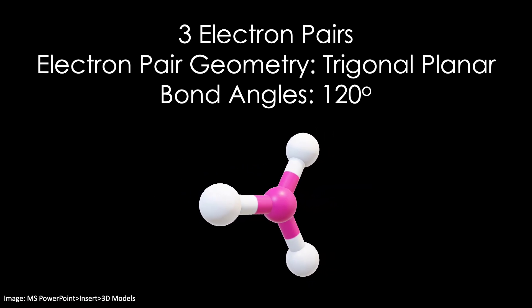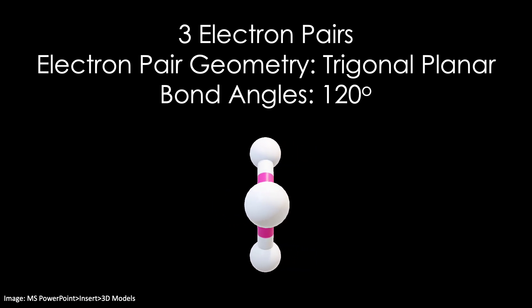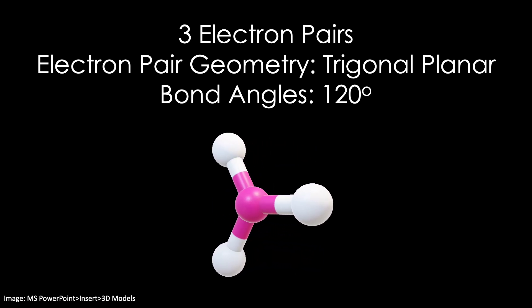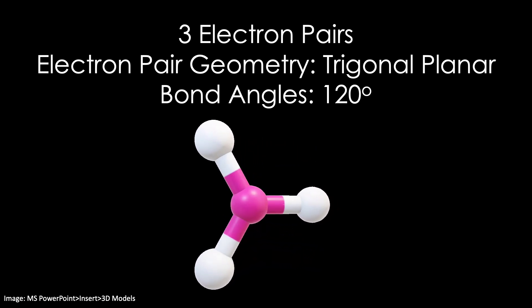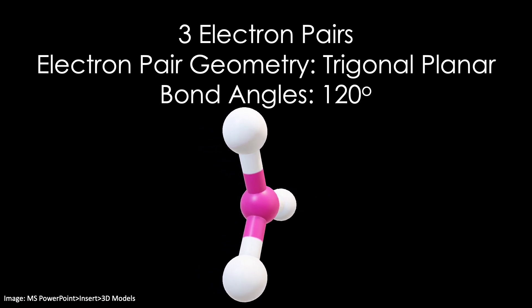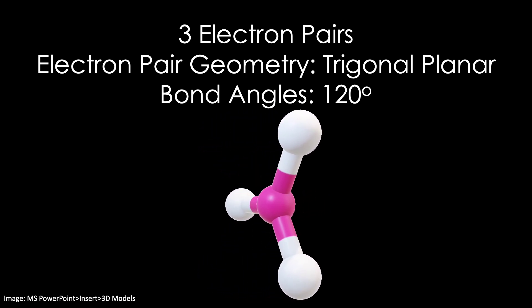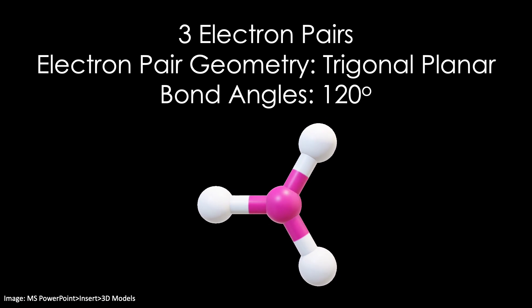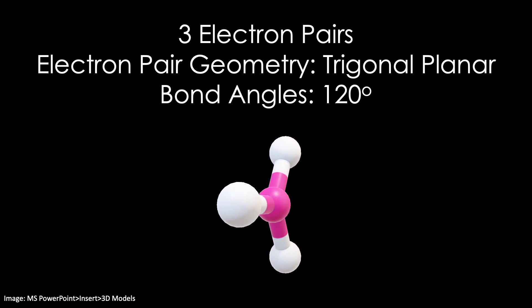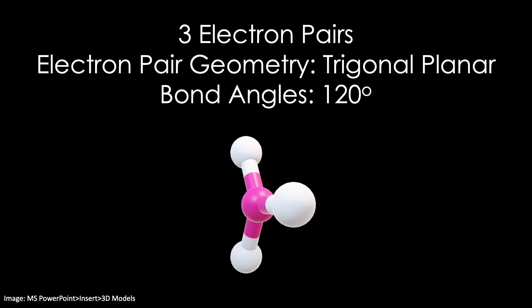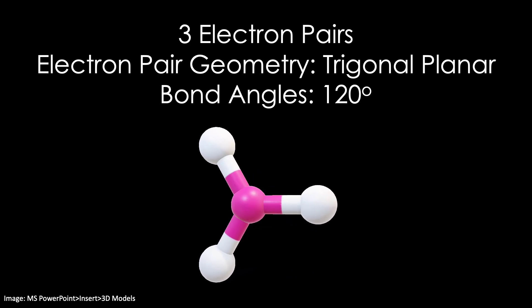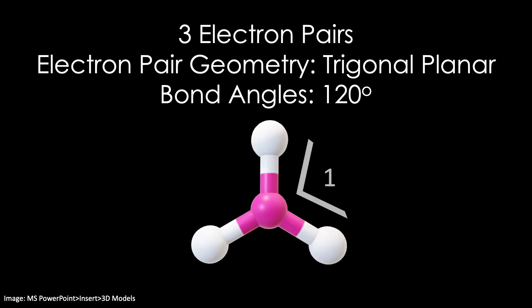For three electron pairs, the optimum electron pair geometry is trigonal planar, with bond angles of about 120 degrees. Notice, as the name suggests, the molecule is flat, or in a plane. Also, there are more bond angles — one, two, and three bond angles, all 120 degrees.